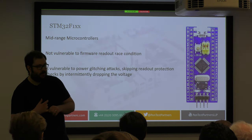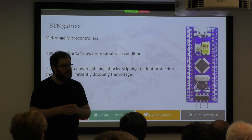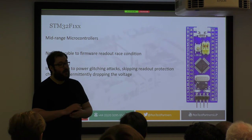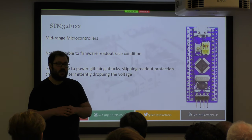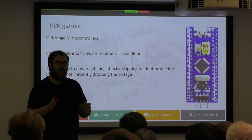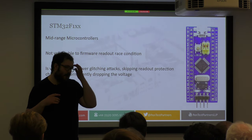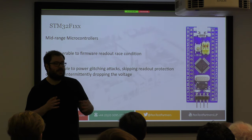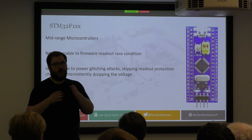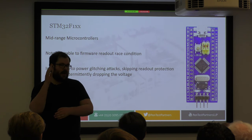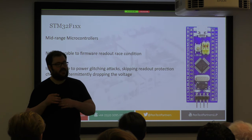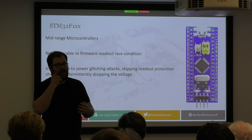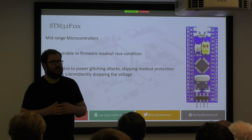Then there's the STM32F1, a slightly more powerful chip in this series, which is not vulnerable to that power-cycling attack — it will always block you and crash when you try to read firmware. However, it is vulnerable to power glitching attacks. By turning the device off and on even faster — say, using an FPGA or more complex tools — you can make it skip the readout protection. You're basically making the chip's heart skip a beat: as you're requesting firmware, you drop the power ever so slightly — in nanoseconds — and the chip gets confused and says 'my readout protection isn't on' and gives you the firmware.